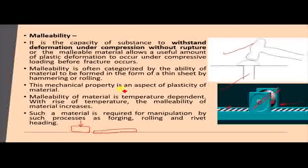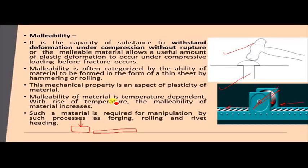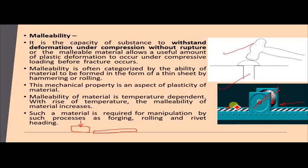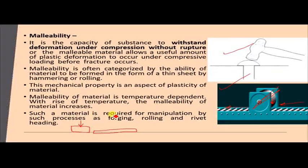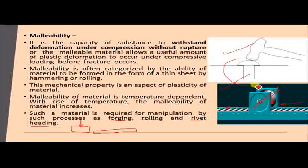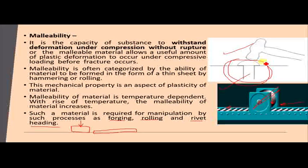In the rolling process, rotating rollers compress the material fed from one side, and a thinner material comes out the other side. Malleability is temperature dependent — heating the material makes it easier to compress without rupture, which is the basis of hot manufacturing processes such as forging, rolling, and rivet heating.